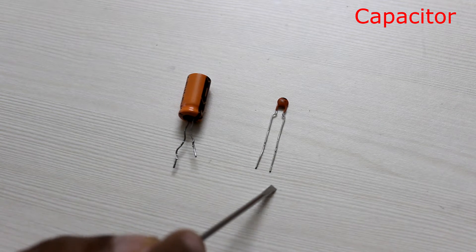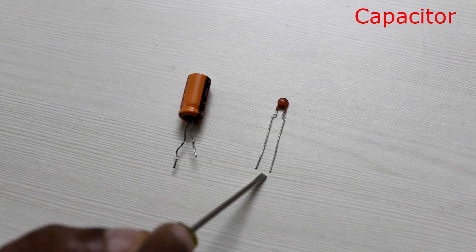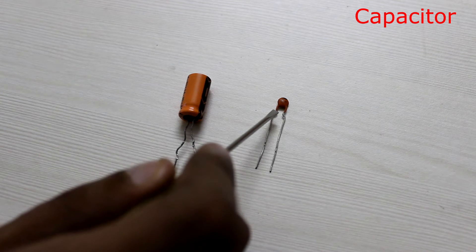The second is a ceramic capacitor which can be connected in either direction. They generally have a small value and the value can be determined from the numbers on their head.